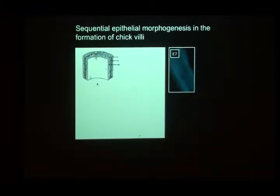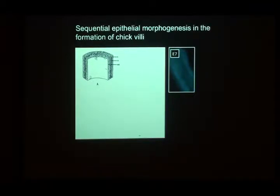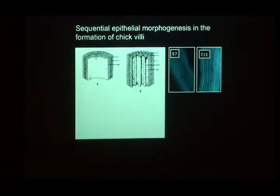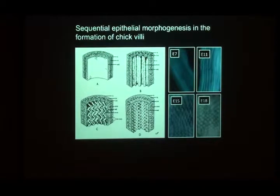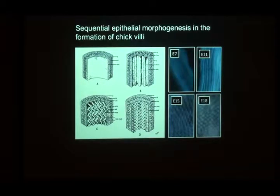You start with a smooth lumen, shown here in a drawing and as an actual photograph at embryological day seven — seven days of incubating the chick. Initially you have a tube with an endoderm surrounded by mesoderm. A day later, that's been transformed from a smooth lining into a series of ridges running the whole length of the gut. A couple days later, those ridges have become deformed into zigzags, and finally those zigzags break apart into individual villi, where each zig and zag of the ridges gives rise to an individual villus.